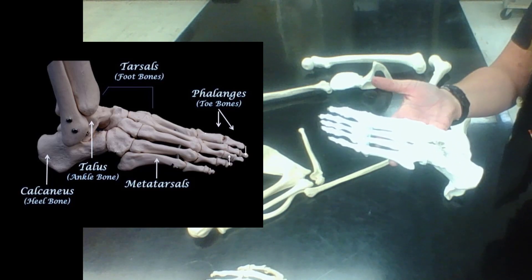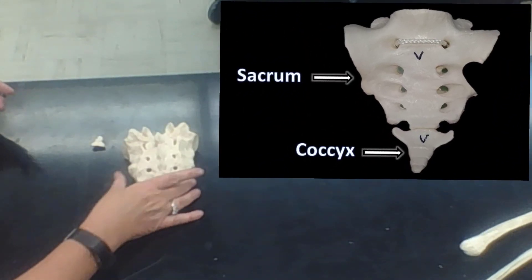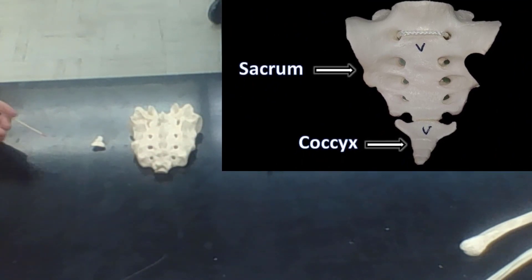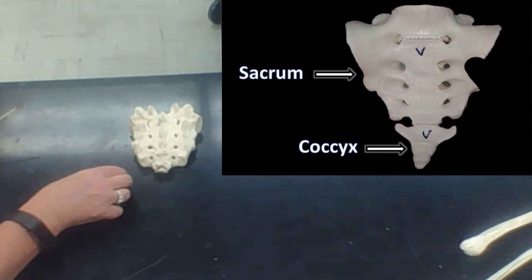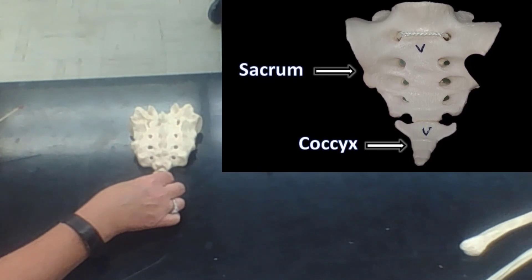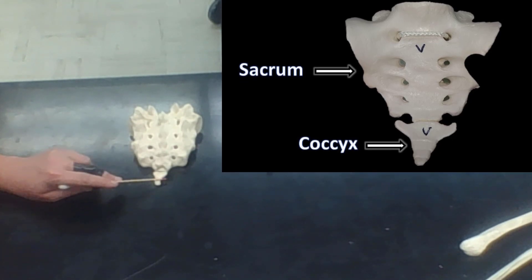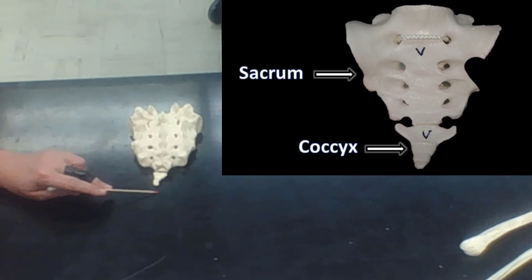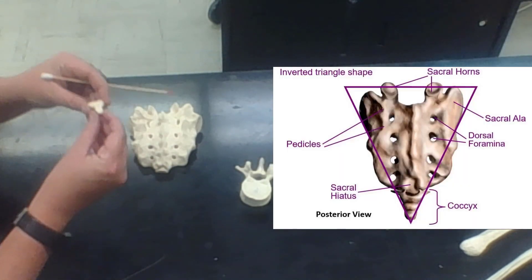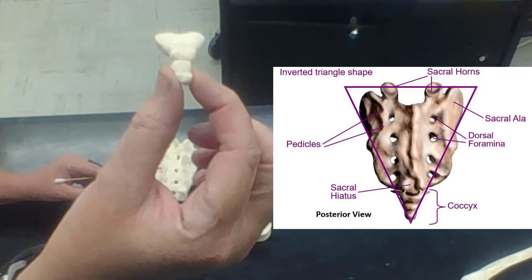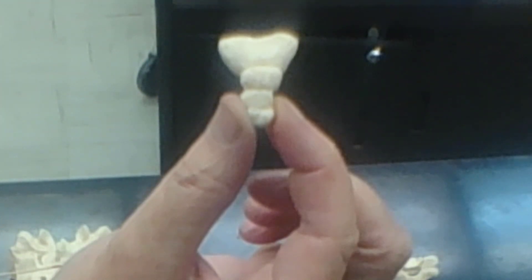Here is the sacrum and the coccyx, which is the tailbone. The coccyx is actually made up of about four fused bones.